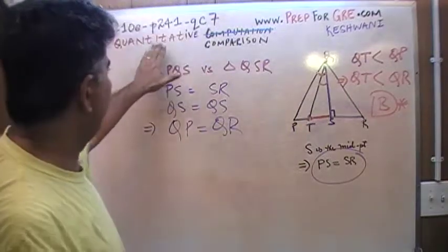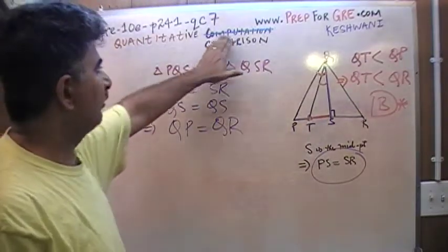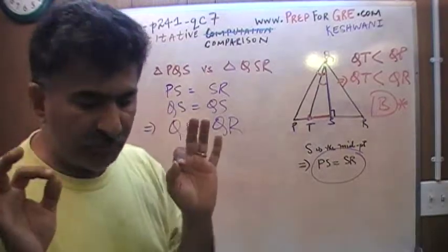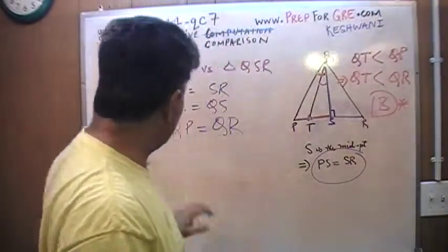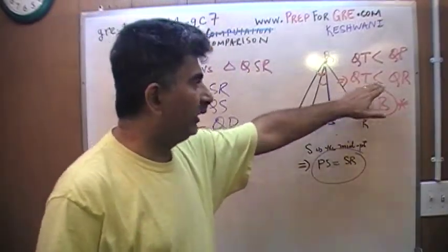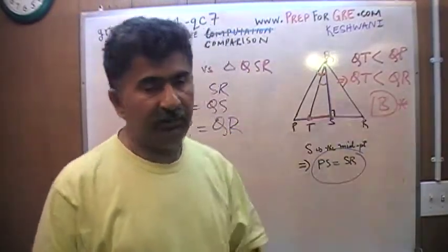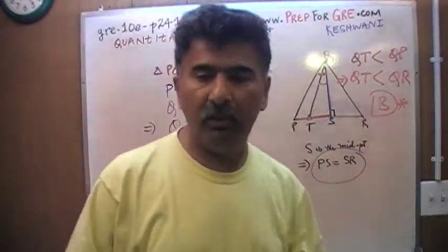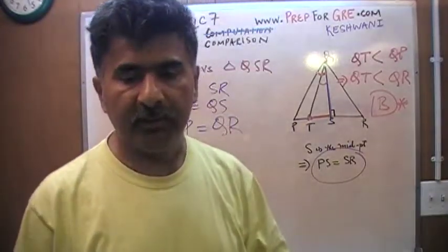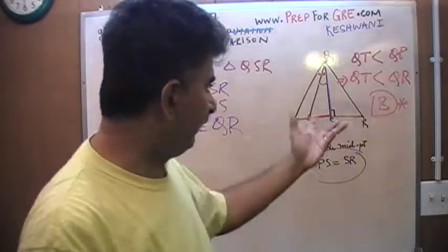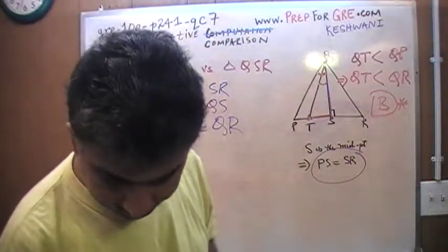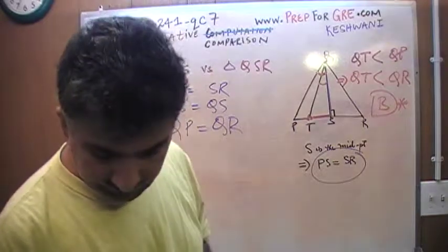That's why I make a point here. These are not quantitative computation. They're not asking you to compute the length. They're asking you to compare the lengths. I don't actually need to know what Q to T is, and I do not need to know what Q to R is exactly. All we have to tell is whether or not they're equal or one is less than the other. Here we found that QT is less than QR.